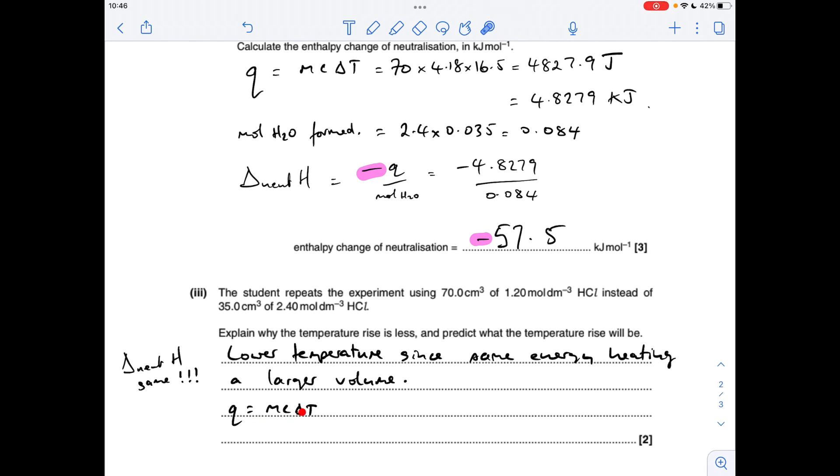So then if we take the Q equals MC delta T expression again and factor that in, we're saying that the Q value is going to be the same. The M value is going to change. It's now going to be 105, 70 plus the 35 of the alkali. C's the same, it's the same solution effectively. So we can rearrange and calculate delta T. So there's the numbers in there. Just be careful you use the joules value for Q and not the kilojoules value, because we're kind of going back to that original equation. And that gives a delta T of 11 degrees C.